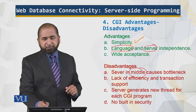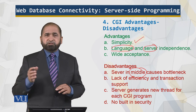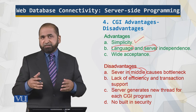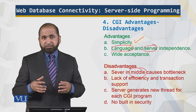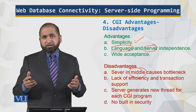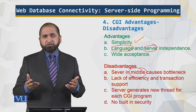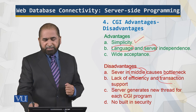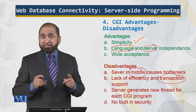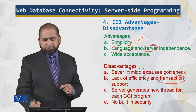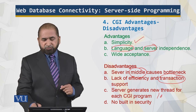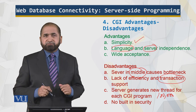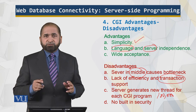The disadvantages: the server is in the middle because everything has to go through the server, which creates a bottleneck. There is a lot of traffic, and in scenarios like Yahoo where hundreds of thousands of processes are spawned, there is a lot of congestion that hurts performance. CGI lacks transaction support — it is stateless. The server generates a new thread for each CGI program, and there could be 100,000 of them. There is no built-in security; it is not very secure.